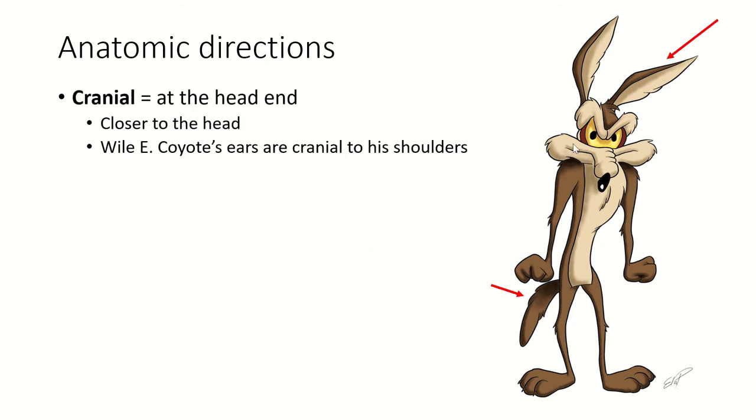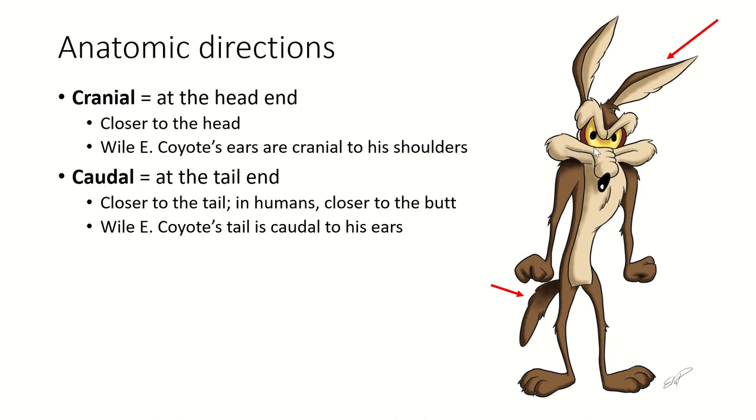Now cranial means toward the head. The top of the head is called the cranium. So cranial means toward the head. Wile E. Coyote's ears are cranial to his shoulders, closer to the head. They're literally on the head. The opposite of that is caudal, which means at the tail end. Now cranial and caudal are really useful in quadruped animals because cranial is anterior and caudal is posterior. But in humans and Wile E. Coyote, the tail is in the middle of the body. Then you got these legs sticking down. So in humans, we use superior and inferior. They're more precise than cranial or caudal, but you will see cranial and caudal used. So make sure you know what they mean.